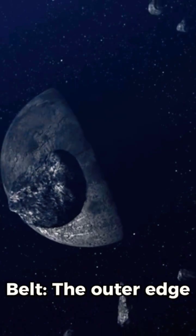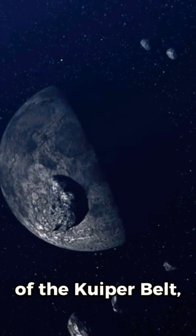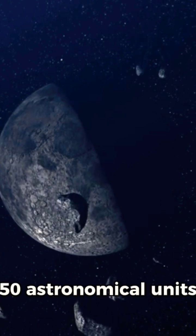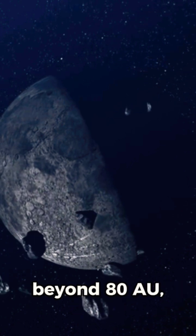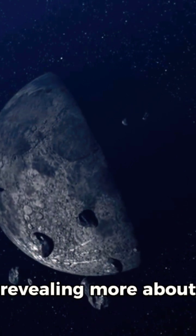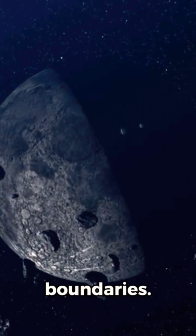Two: Extended Kuiper Belt. The outer edge of the Kuiper Belt, once thought to end at 50 astronomical units from the Sun, might actually extend beyond 80 astronomical units, revealing more about the solar system's boundaries.